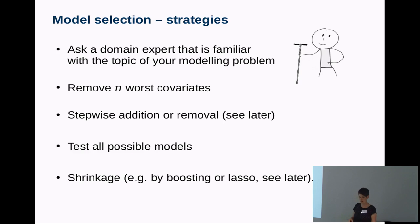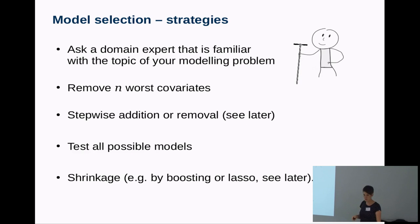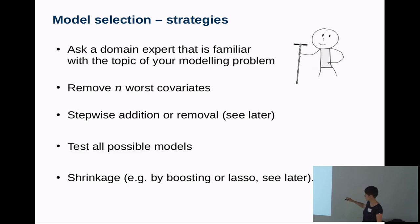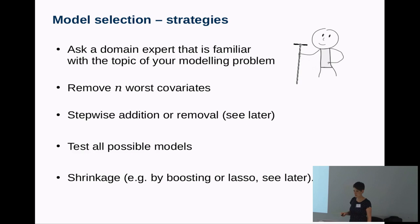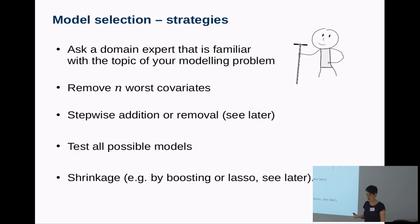Another strategy is to remove a couple of the worst covariates, but then you need a measure to know which ones are worst — we will see that with variable importance. Or use stepwise addition or removal, or test all permutations of possible models. In stepwise regression, the drop in R-squared is used as a ranking. In random forest, covariate importance can also be used as a ranking.